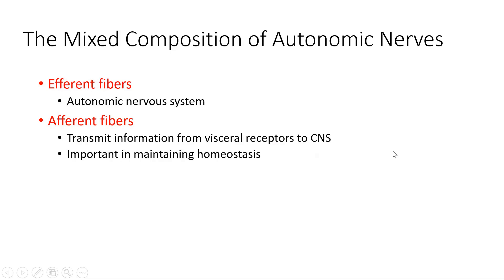Looking at the mixed composition of our nerves, we have two directions of fiber travel. Efferent fibers come from the central nervous system — from the integrating centers — bringing autonomic nervous system instructions down. Afferent fibers go from visceral receptors, sending sensory input up to the integrating centers in the brain and spinal cord. A spinal nerve therefore has fibers going in both directions: sensory signals traveling to the brain and efferent fibers bringing instructions to autonomic organs.